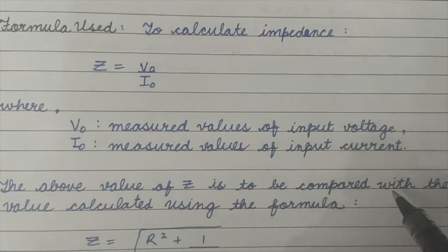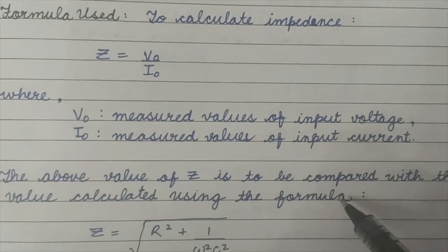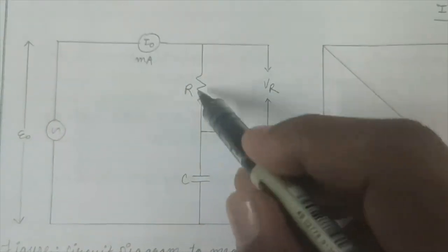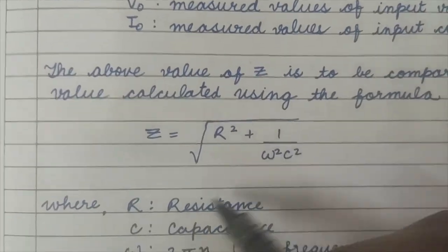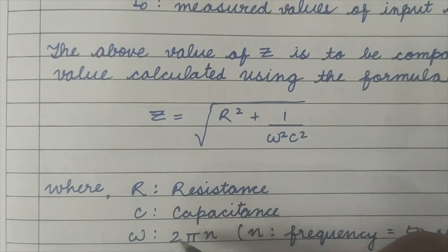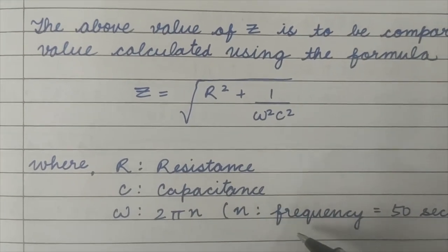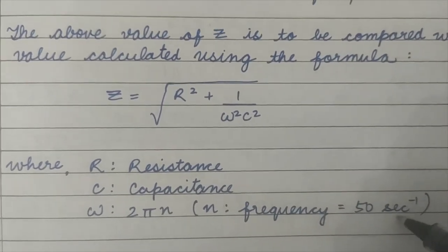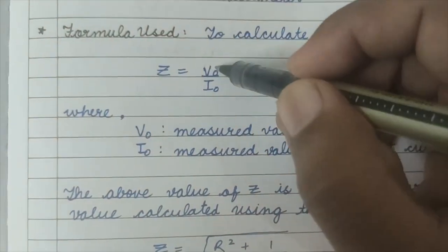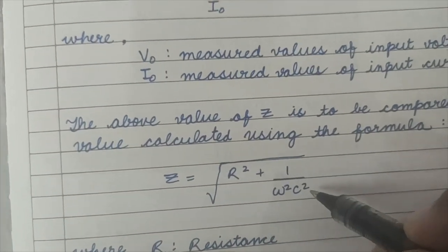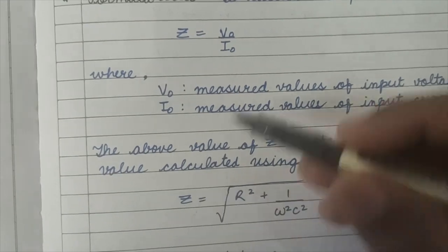This observed Z value is to be compared with the value calculated using the formula Z = √(R² + 1/(ω²C²)), where R is the resistance, C is the capacitance, and ω = 2πN, with N being the frequency at 50 cycles per second. We will compare both values and then draw the circle diagram.